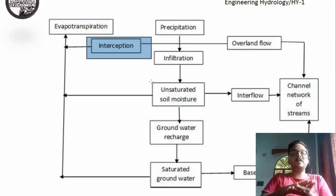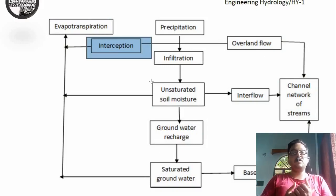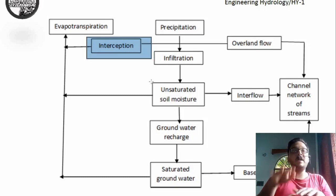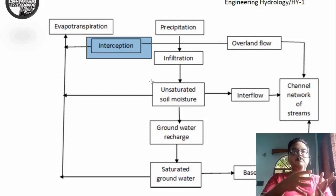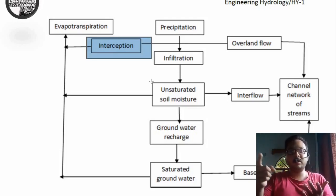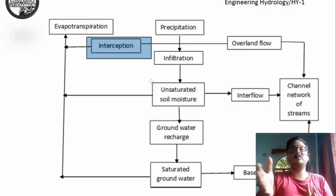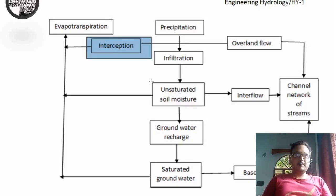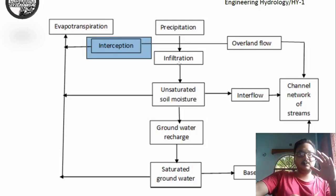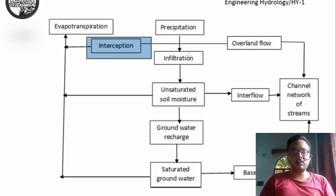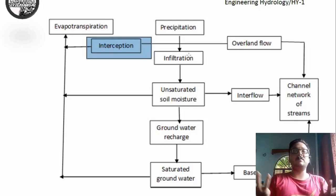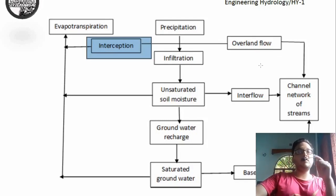From evapotranspiration and precipitation, two things occur. One is interception — where plants become a hindrance for precipitation droplets reaching the Earth's surface. Before reaching the surface, plant leaves come in between and intercept the falling water droplets, just like in a football match where a player intercepts a pass. The water that was supposed to fall to the ground gets hindered by plant leaves or branches and is taken up by the plant.